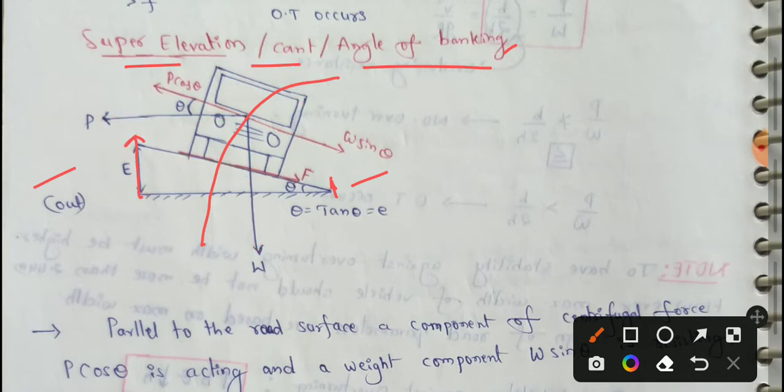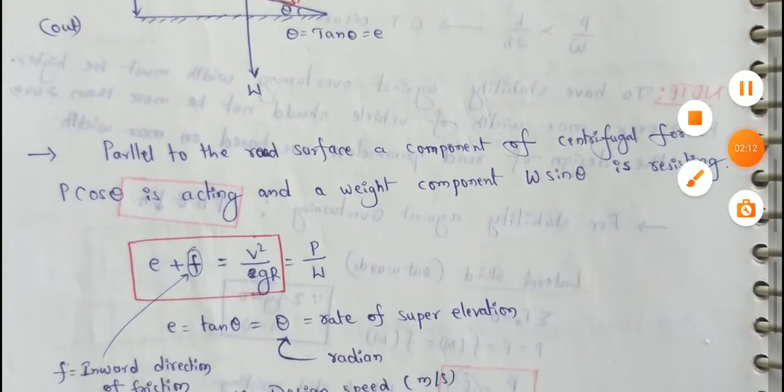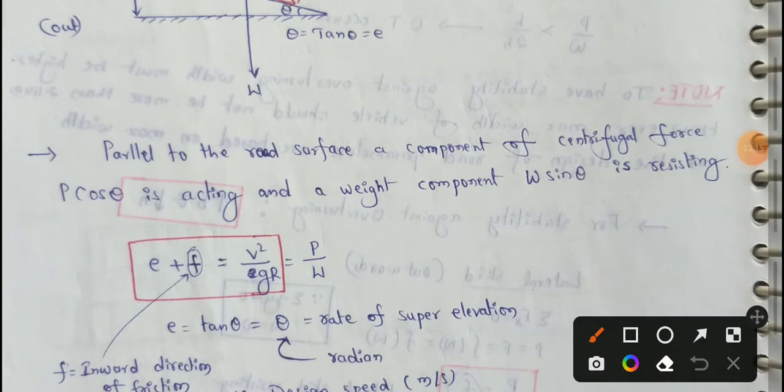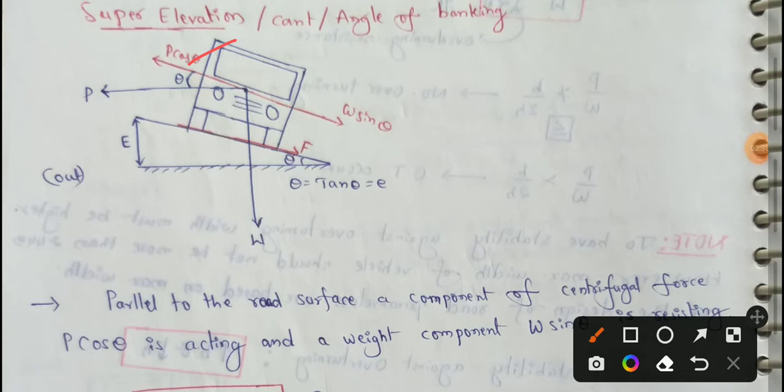Parallel to the road surface, a component of centrifugal force, p cos theta is acting. That way, weight component, w sin theta is resulting. This p cos theta is centrifugal force component. This is acting. This is resulting.